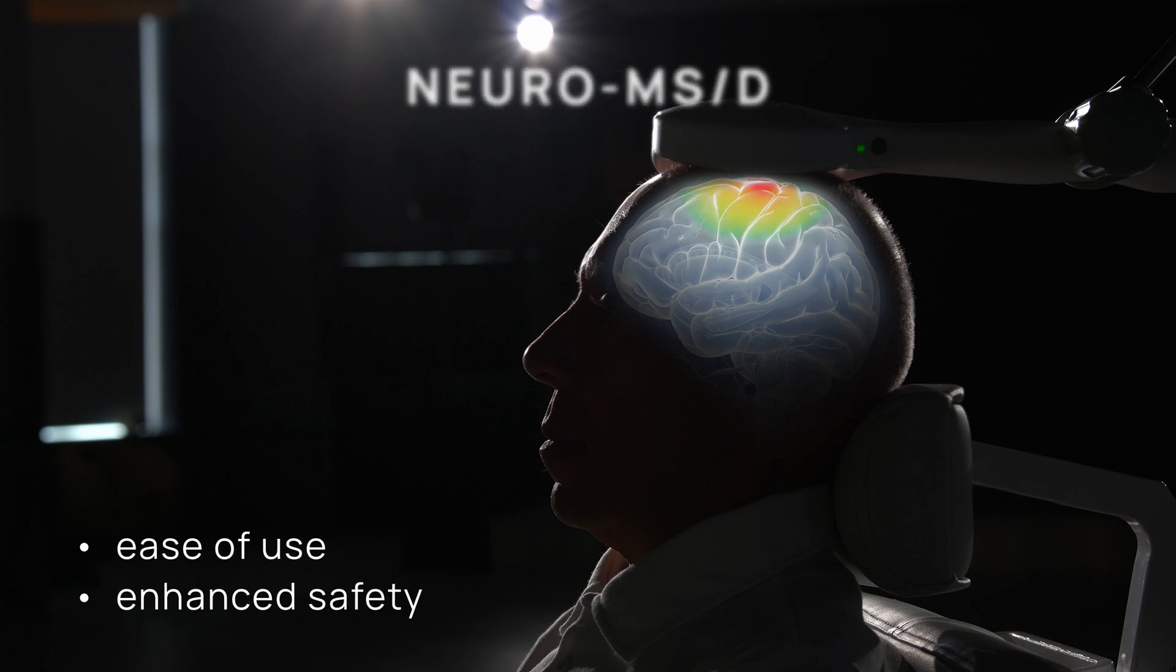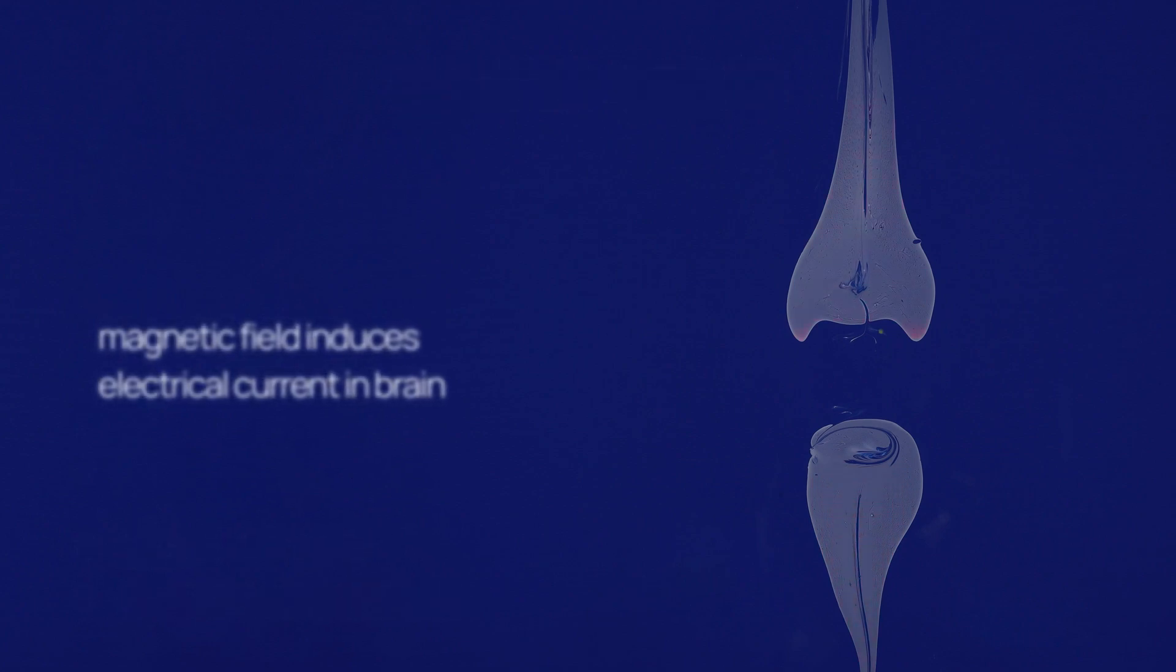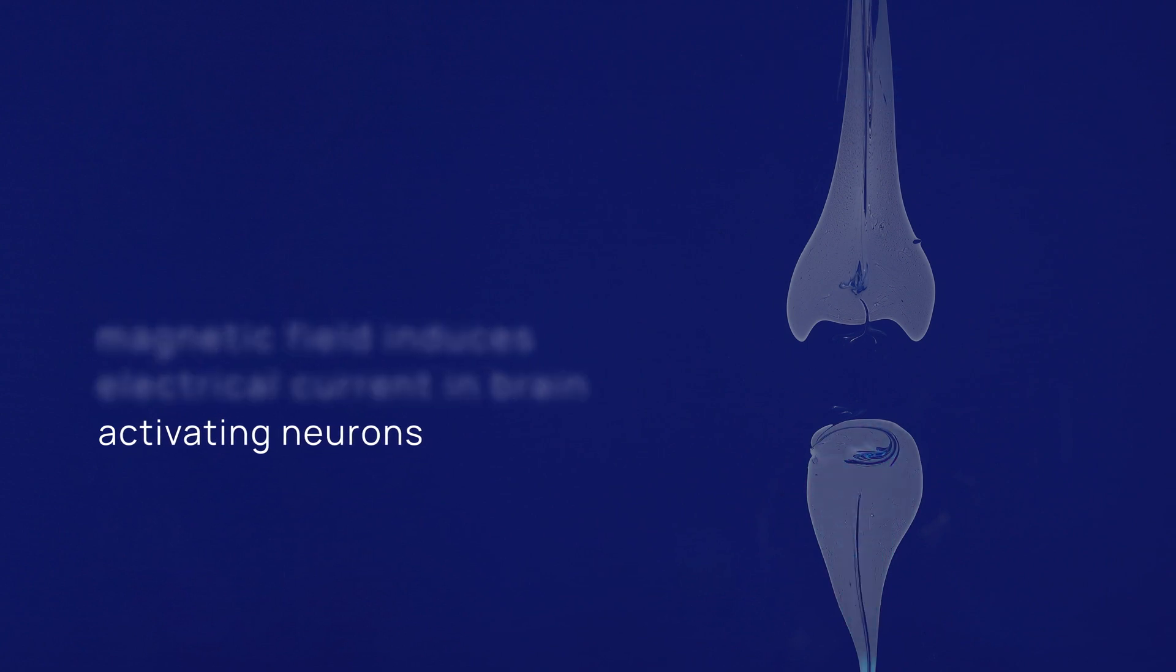During a TMS session, a magnetic coil is positioned against the scalp near the forehead. Brief magnetic pulses delivered by the system specifically target the affected areas of the brain.